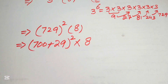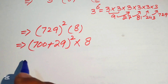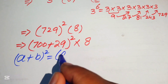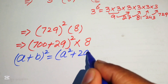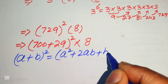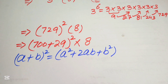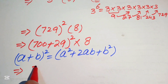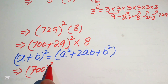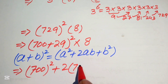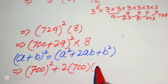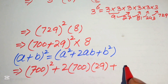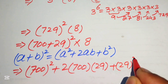We apply the square identity: (a + b)^2 equals a^2 plus 2ab plus b^2. Expanding with a = 700 and b = 29, we get 700^2 plus 2 times 700 times 29 plus 29^2, all multiplied by 8.